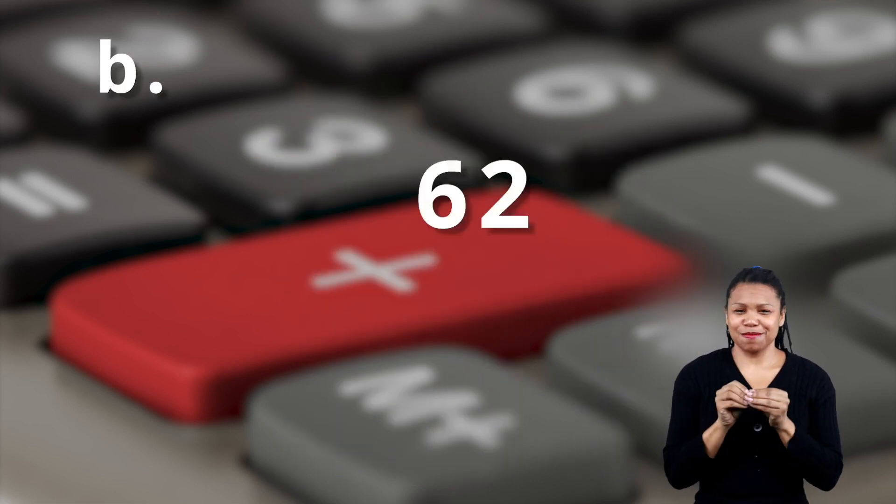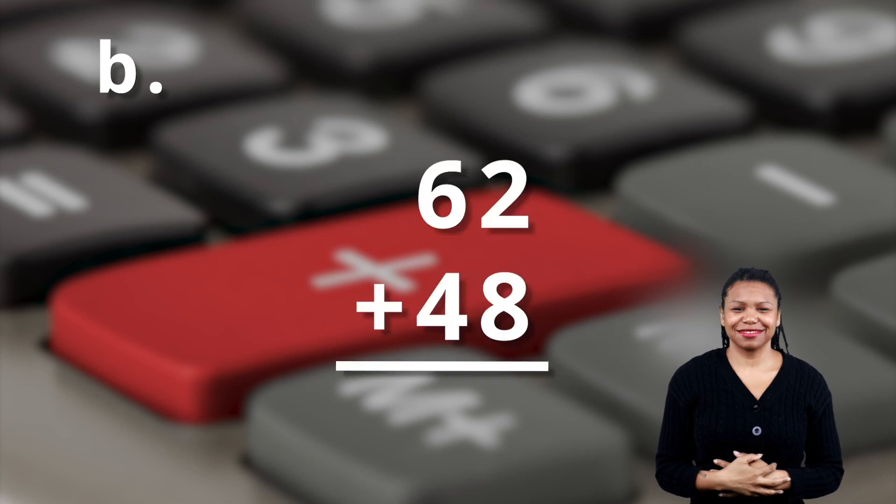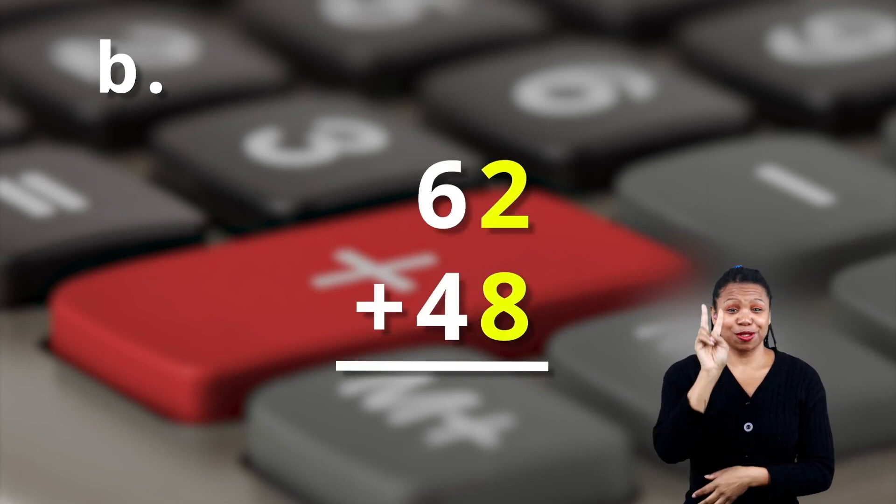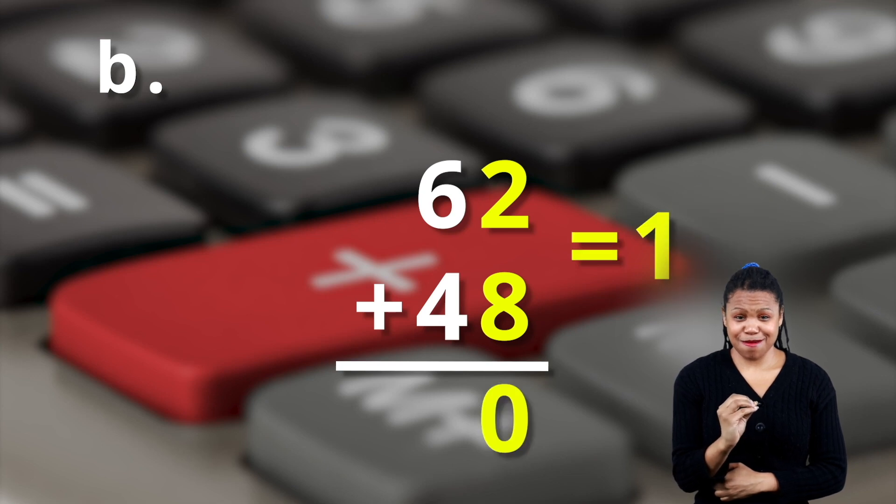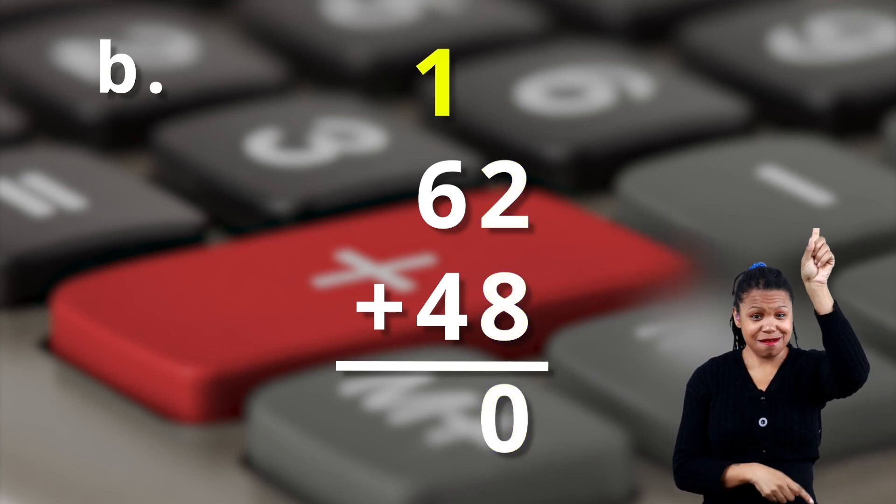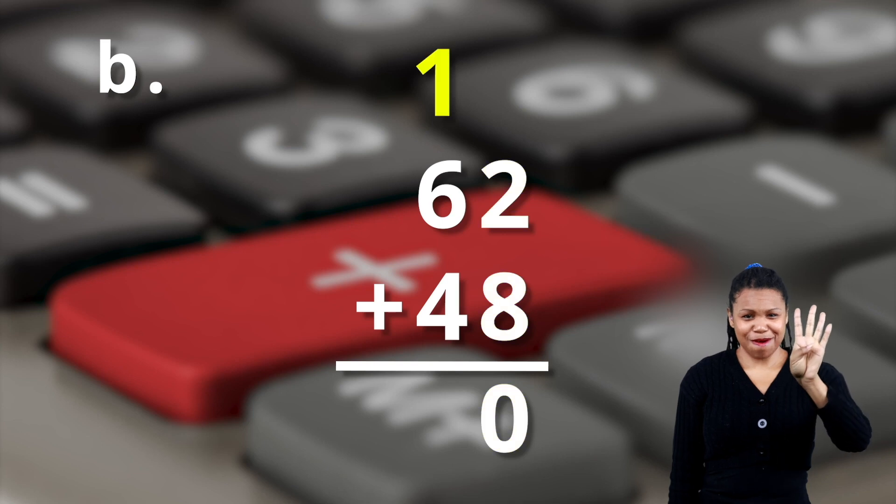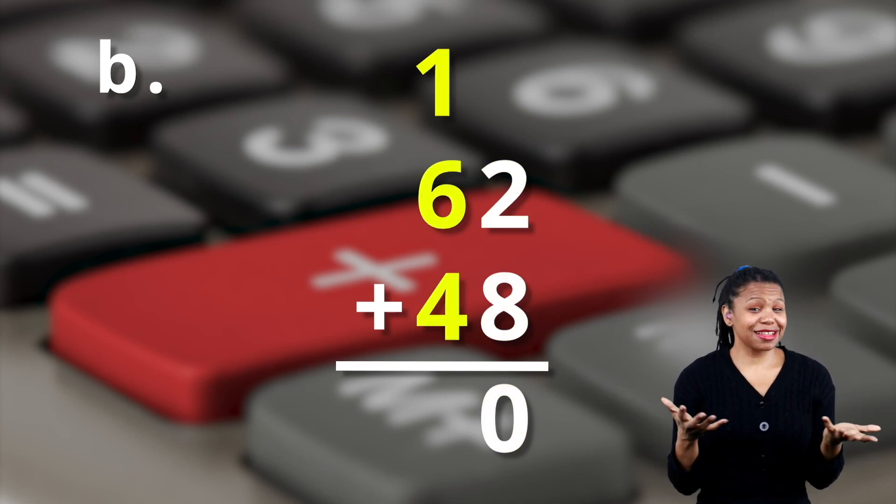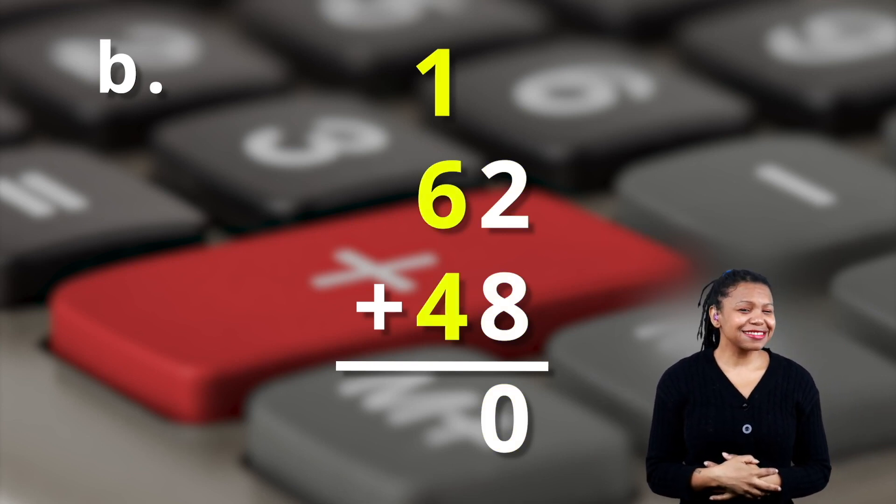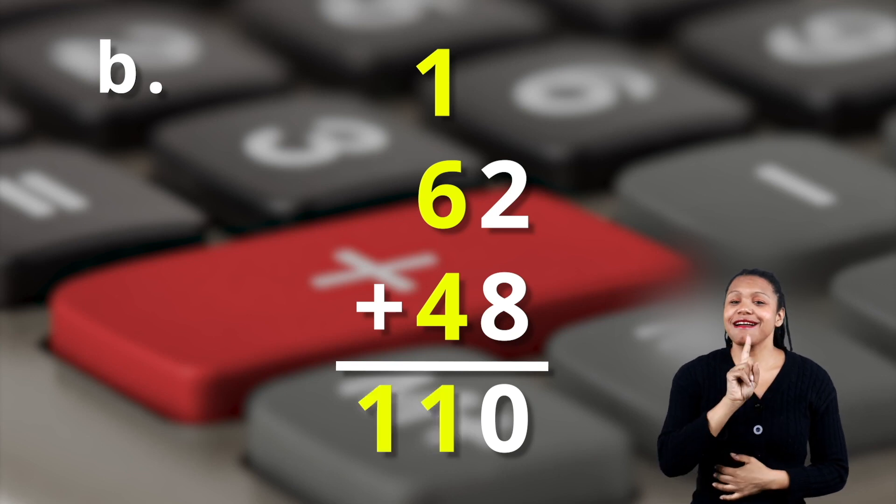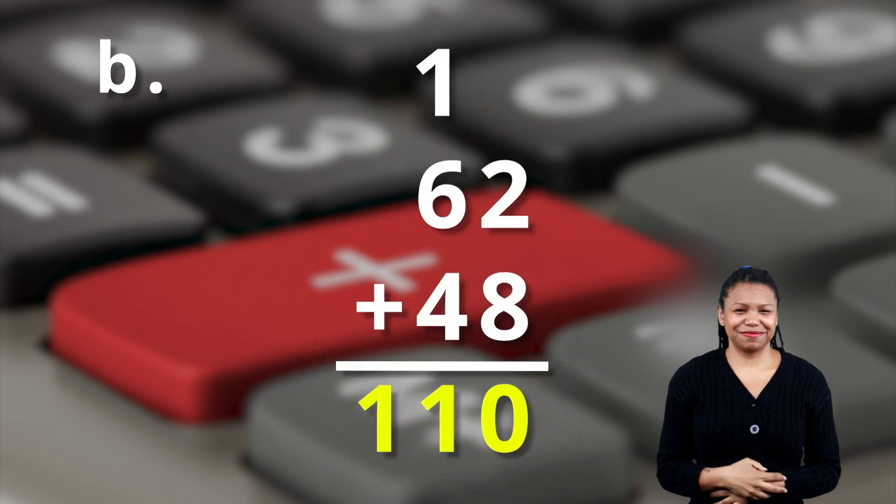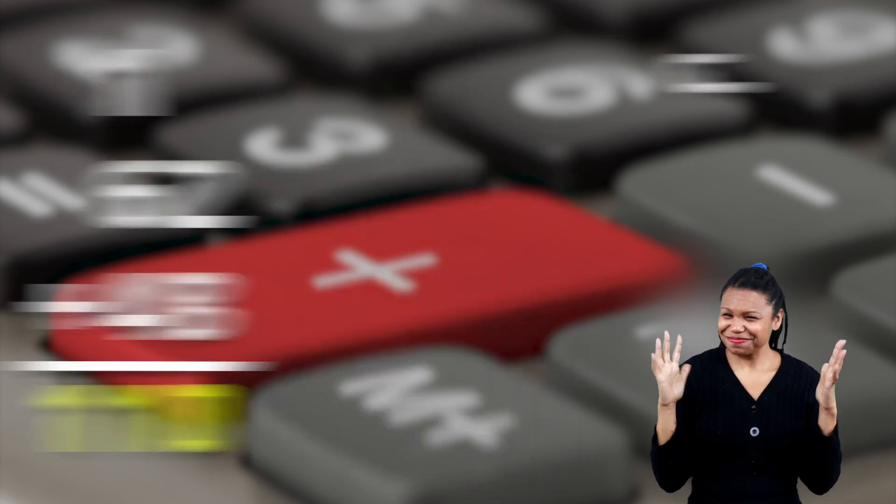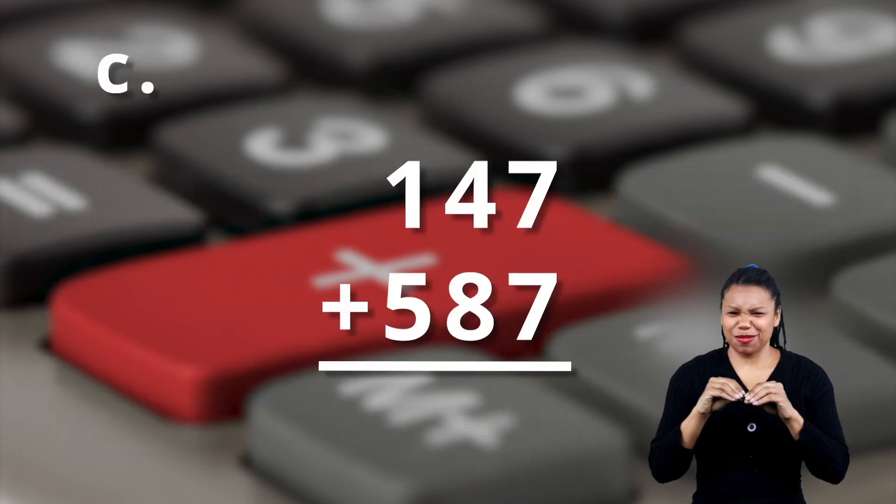Here we go. We've got sixty-two plus forty-eight. So we've got the two and the eight equal ten. So a zero goes in the ones column. A one goes up in the tens column near the six. So we have one plus six plus four is eleven. So sixty-two plus forty-eight is a hundred and ten. Now you're getting it.